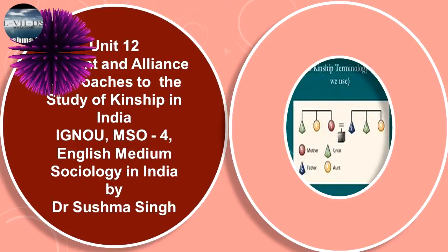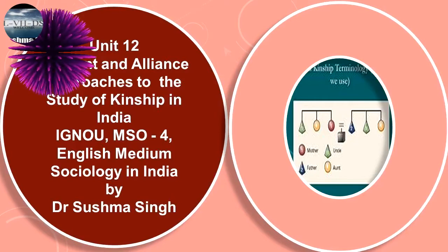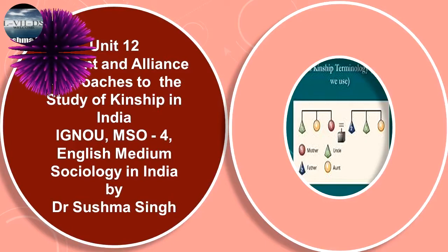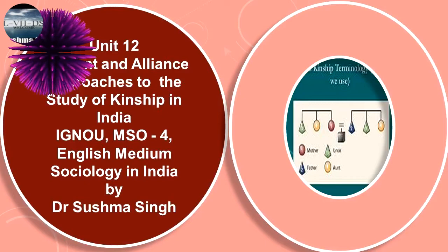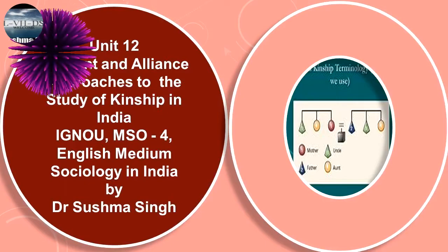In describing a kinship terminology, it is usual to denote the speaker by the name of ego. The word ego means 'I' in Latin and refers to the first person singular pronoun, the speaker. Ego can either be male or female.